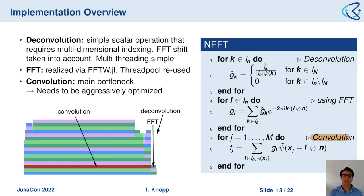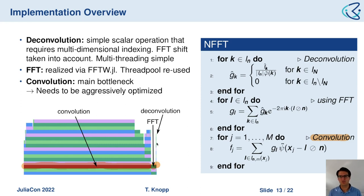Finally we come to the convolution — the last step — and it must be said that this is the main bottleneck of the NFFT. This can be seen in a profiling result: the convolution dominates, the FFT fraction is very short, and the deconvolution is barely visible in the profile. This motivates focusing our attention on optimizing the convolution.